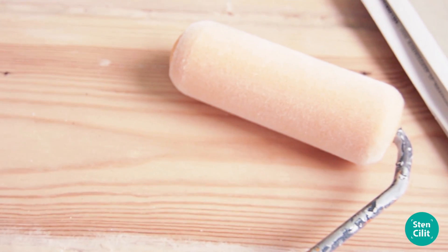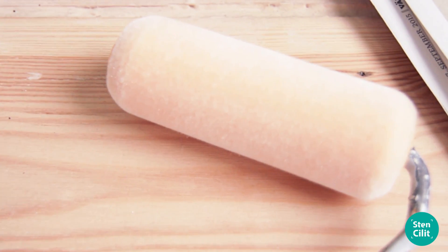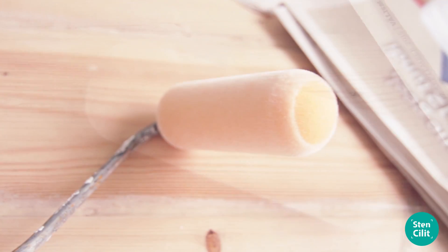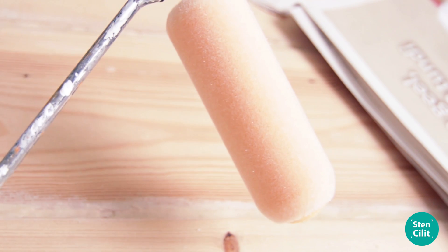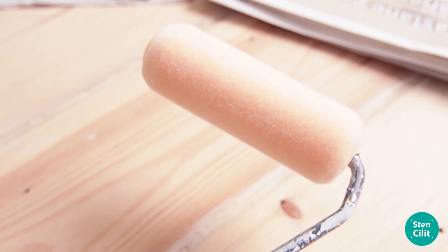We highly recommend using a flocked roller for stenciling. Firstly, it has rounded edges which do not leave sharp marks when stenciling. And most importantly, it does not hold too much paint, which is important when stenciling and means that the paint cannot seep under the stencil.